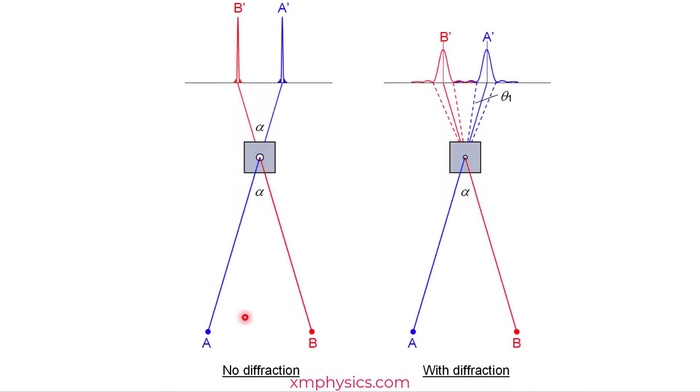So here's an illustration. We have two objects A and B forming their images at A' and B'. But this is if their light doesn't diffract as it passes through the hole. So this diagram is a more accurate illustration. Both A and B will form images which are kind of smeared, kind of spread out.